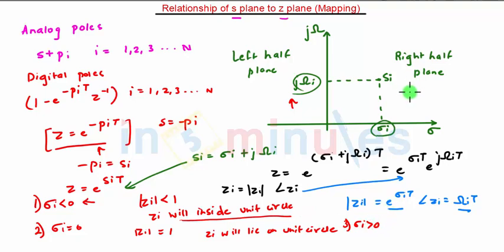Third condition: sigma_i > 0. The analog pole si will lie on the right half of the s-plane. In this case, |z_i| > 1, so z_i will lie outside the unit circle.